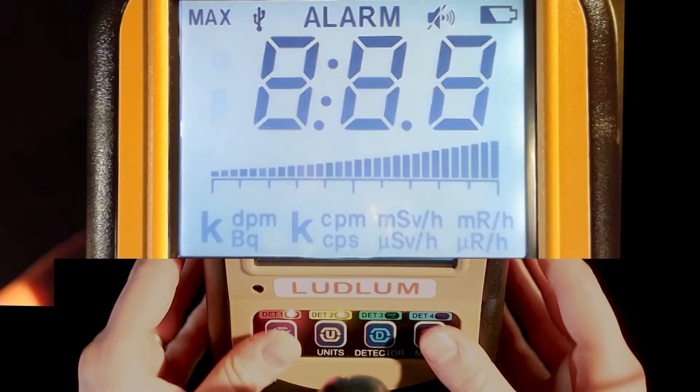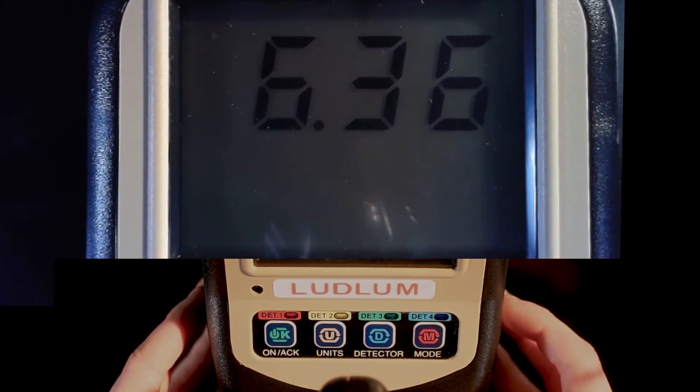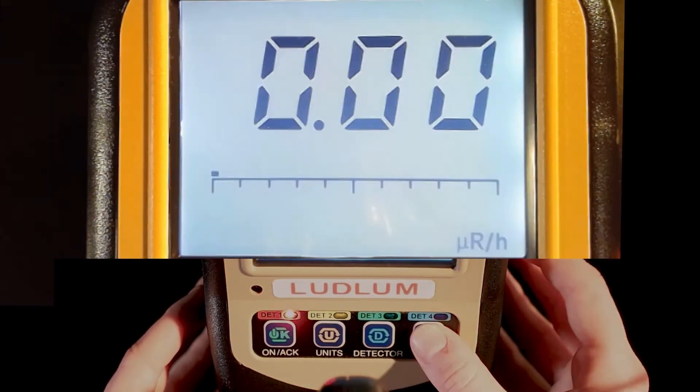Turn the meter on by pressing the ON ACK button. The display will flash through four screens and then will display the rate meter screen.